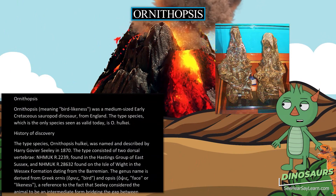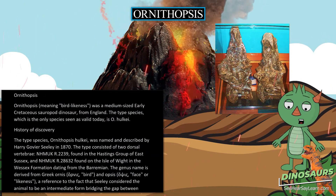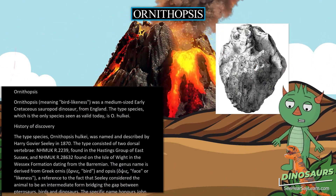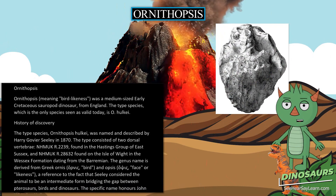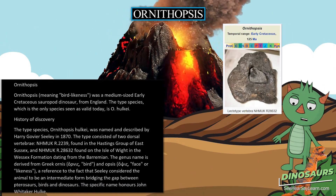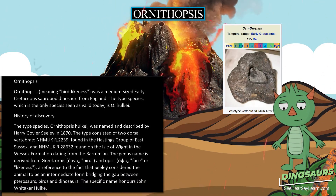Ornithopsis, meaning 'bird likeness,' was a medium-sized early Cretaceous sauropod dinosaur from England. The type species, which is the only species seen as valid today, is O. hulcae.